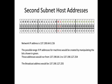For the second subnet, the base network address is 137.190.64.0/26. Notice that 137.190.64.0 is one more than the previous subnet's broadcast address of 137.190.63.255 — the subnets are contiguous. By manipulating the green bits shown in the slide, the possible host addresses range from 137.190.64.1 to 137.190.127.254, with the broadcast address being 137.190.127.255.